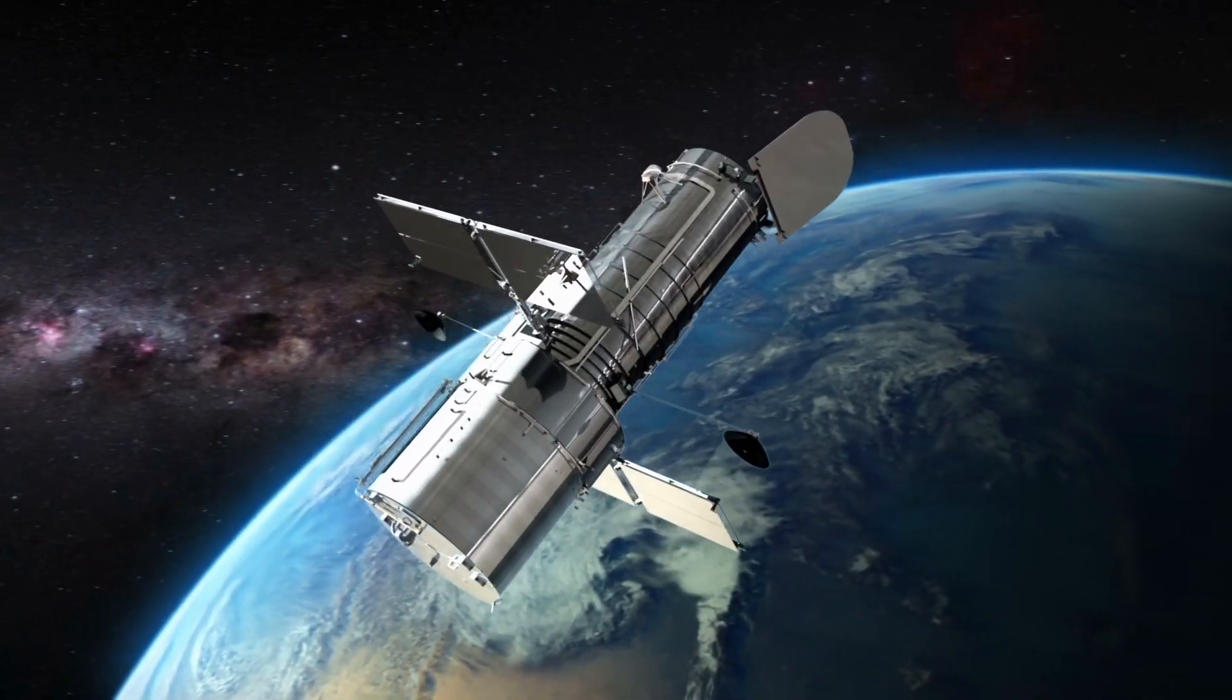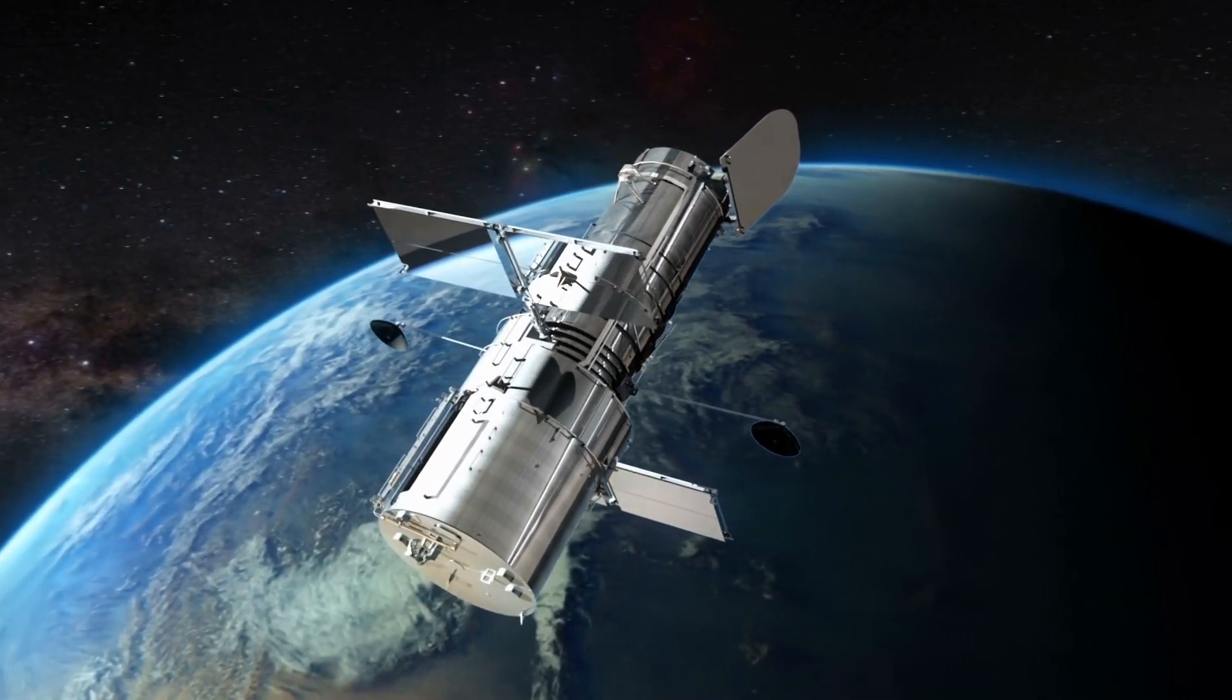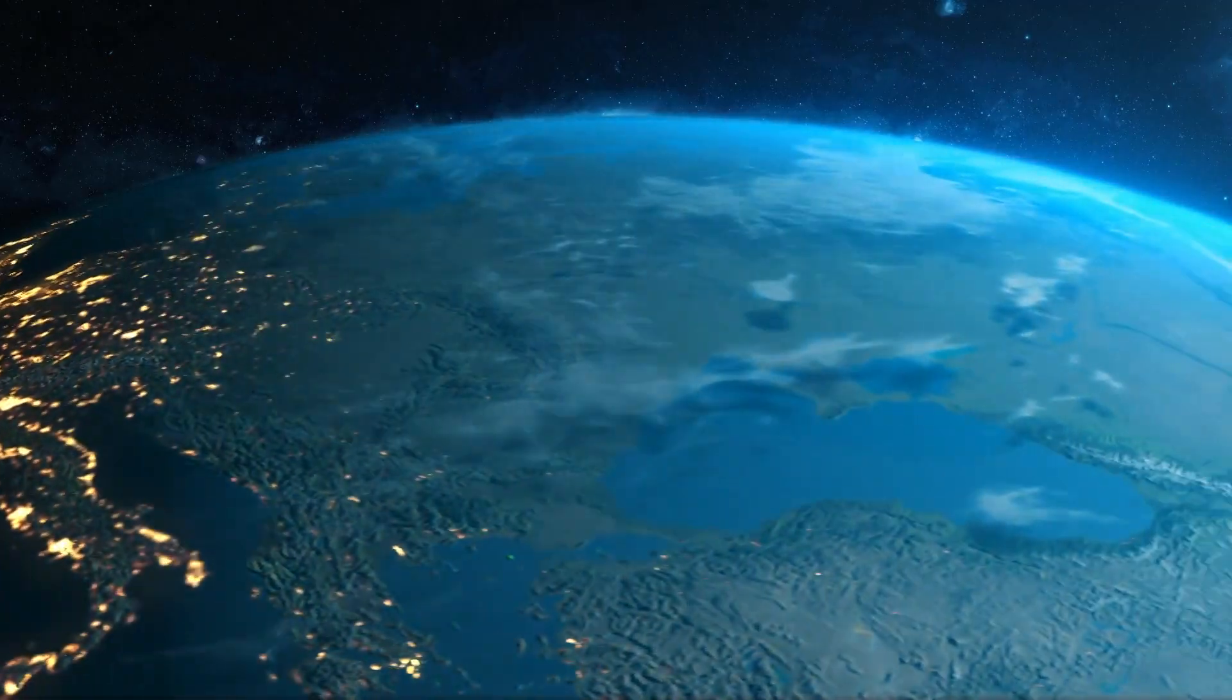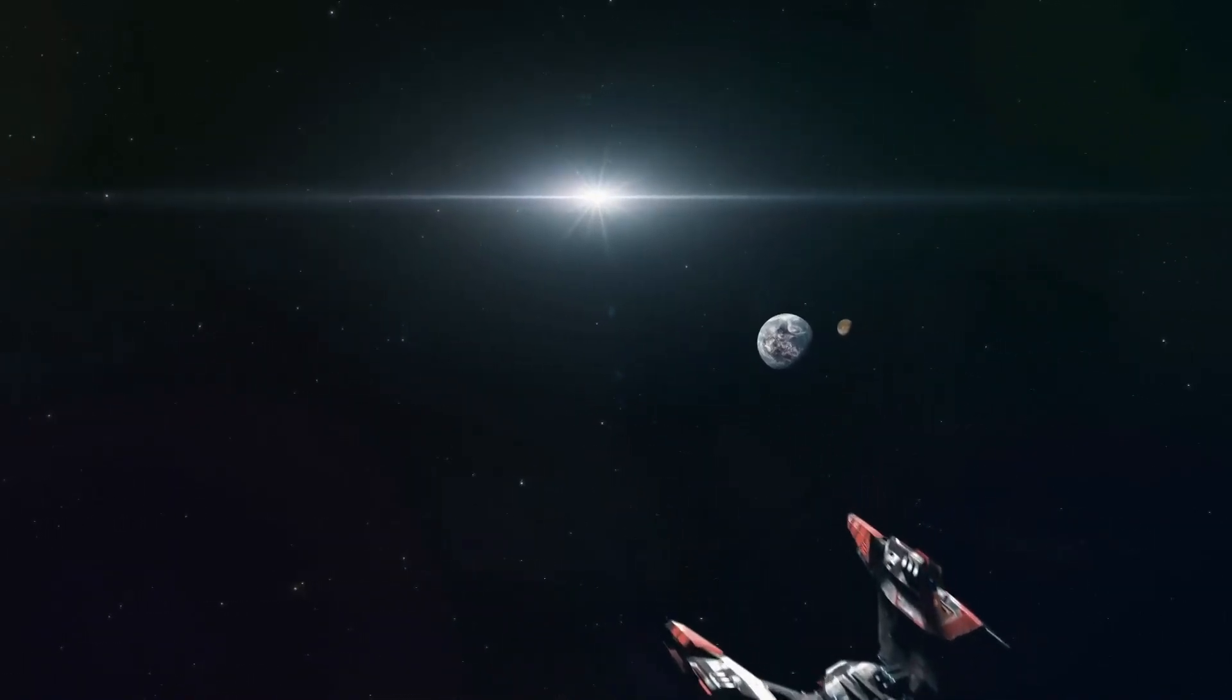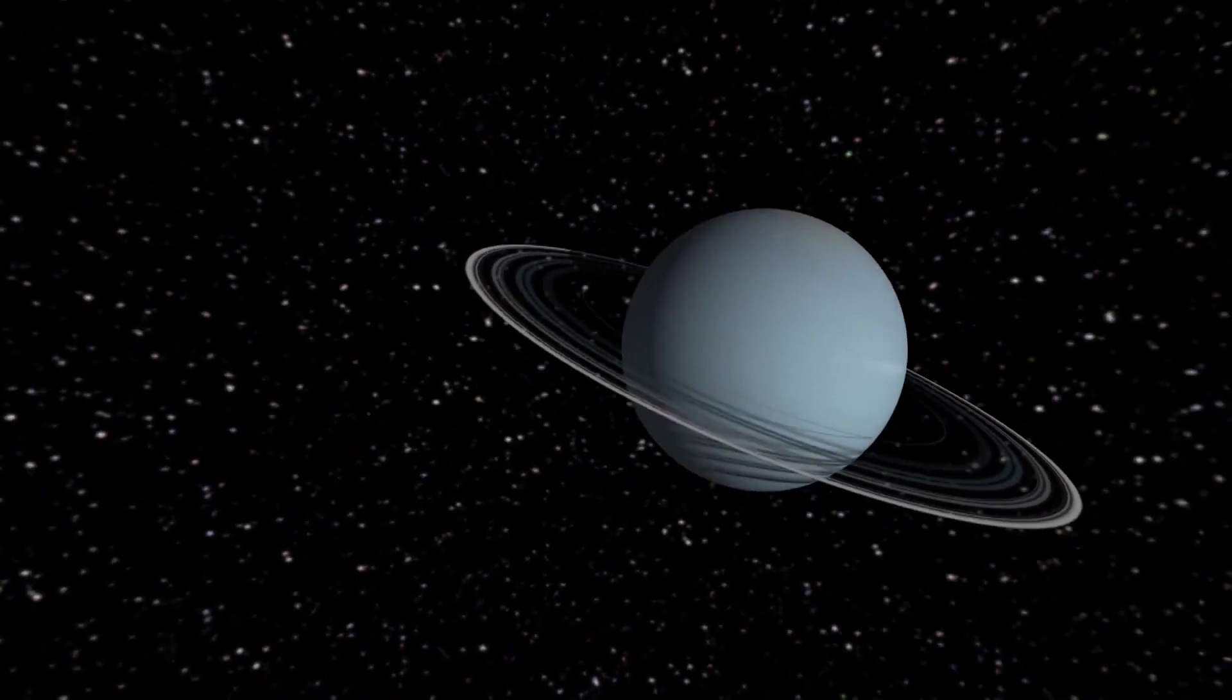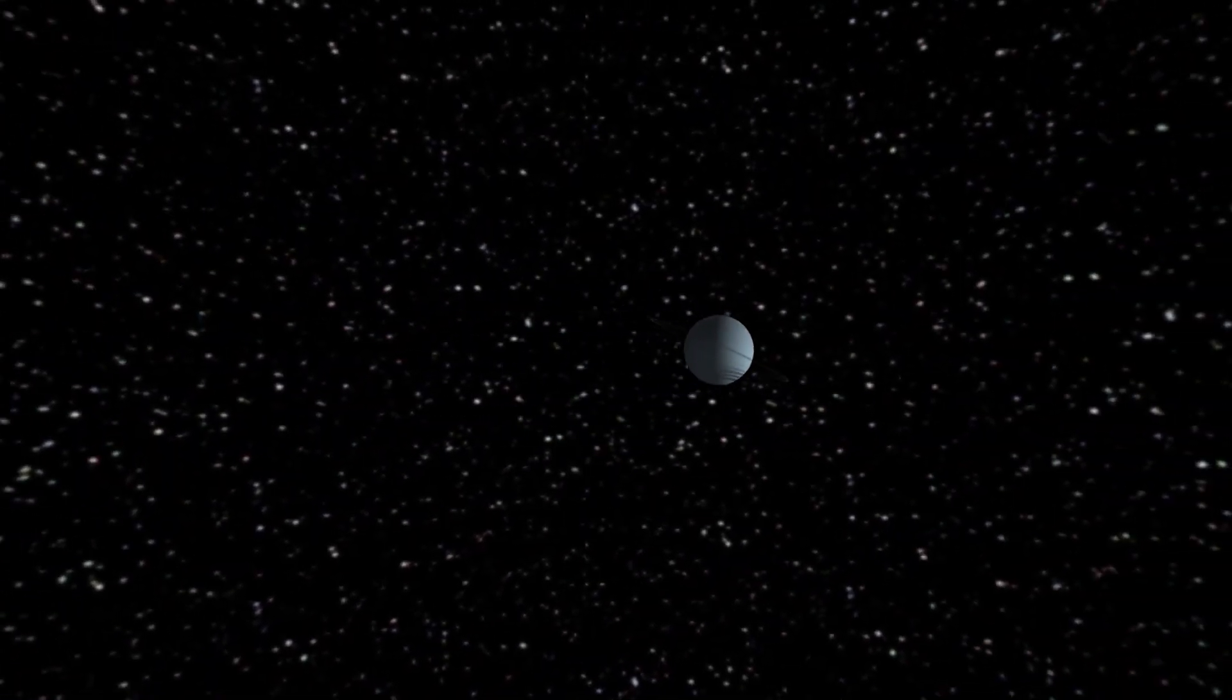Hubble currently orbits the Earth at about 332 miles, or 535 kilometers, above the Earth's surface, completing one orbit around the planet every 95 minutes. Throughout its three-decade history, the Hubble Telescope has covered a distance equivalent to a trip to Neptune, traveling at a speed of 17,500 miles per hour.